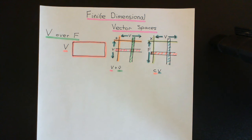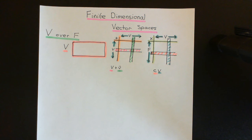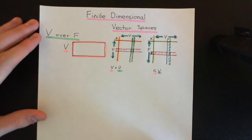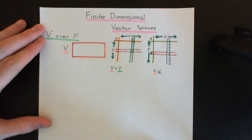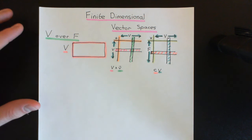For more information about those axioms, see the video on the definition of a vector space earlier in this playlist. So there's our warm-up — we now have our nice picture of a vector space. Let's go straight into the definition of what is meant by a finite dimensional vector space.